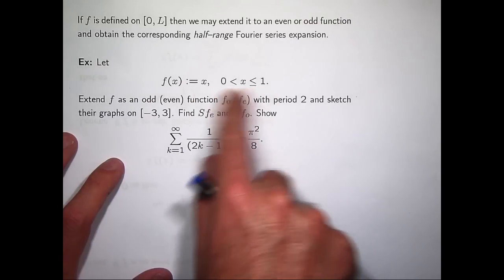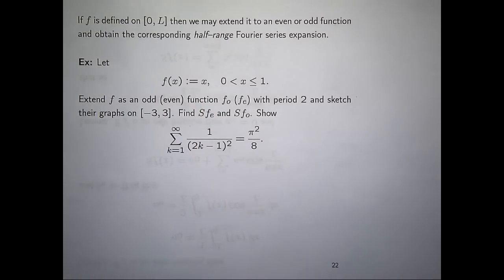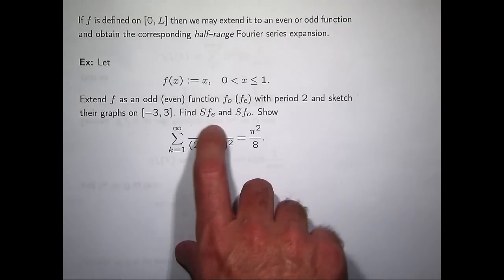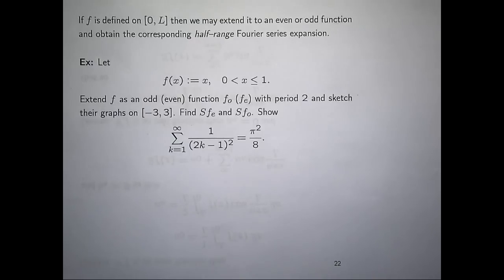Let's consider the following example. We have a function defined on a half-open interval, and the function is just x. We're asked to extend f as an odd function f_O and as an even function f_E such that these extensions have period 2. We're also asked to sketch their graphs and calculate the corresponding Fourier series, and to show that a certain infinite sum equals π²/8. I'm going to do the even function first, and if time permits I'll do the odd function.